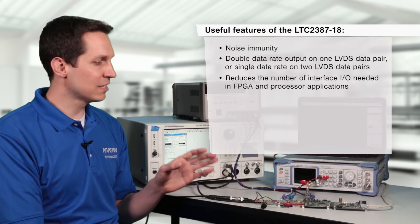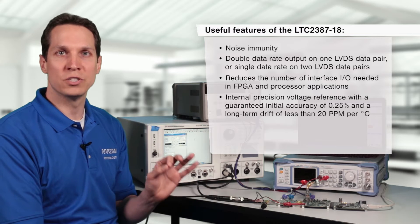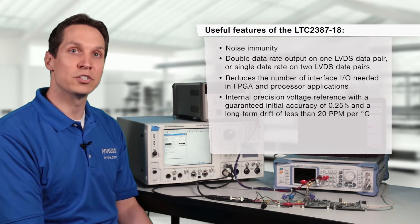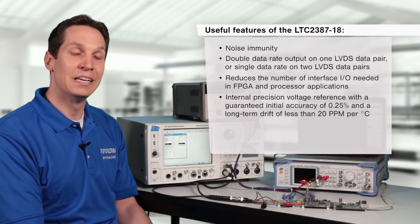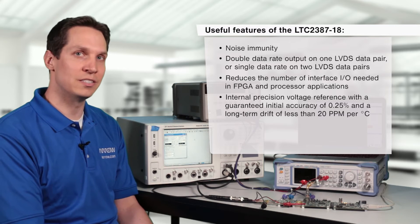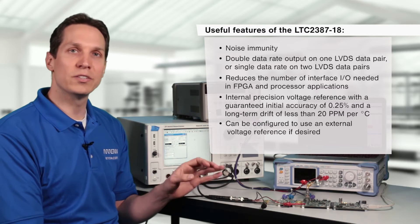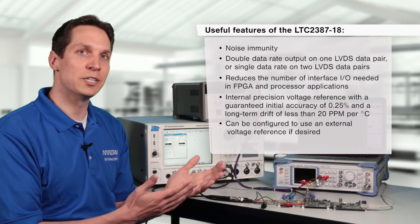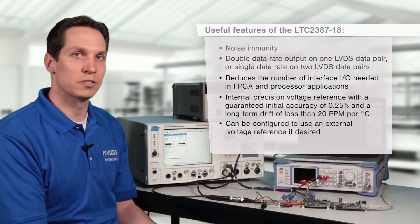Included within the data converter, there is an internal precision voltage reference that has a guaranteed initial accuracy of 0.25% and a long-term drift of less than 20 ppm per degrees C. The LTC-2387-18 can also easily be configured to use an external voltage reference if desired.